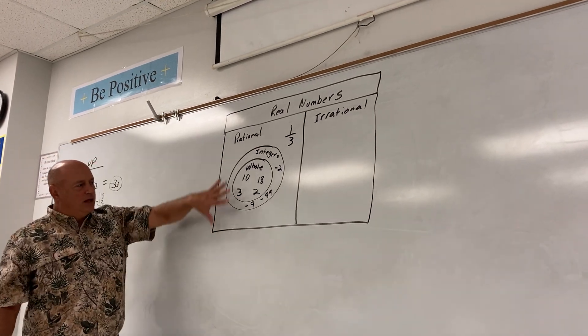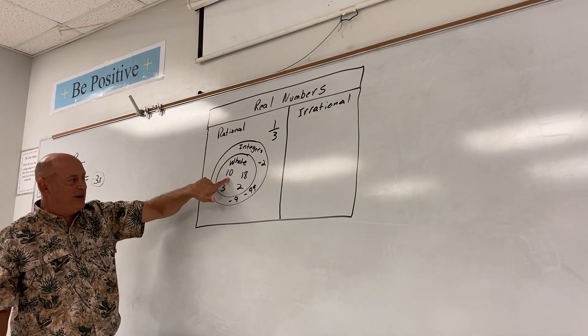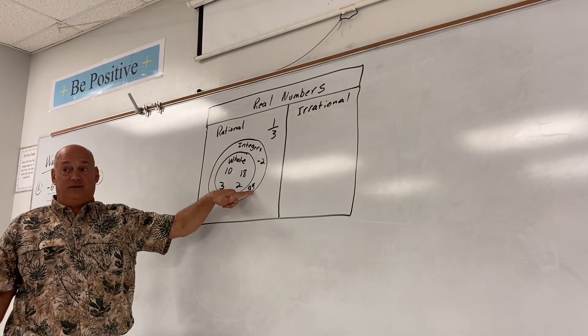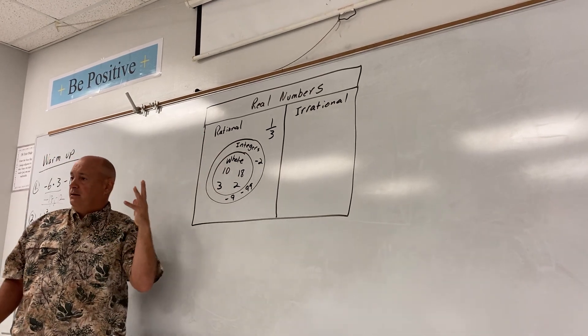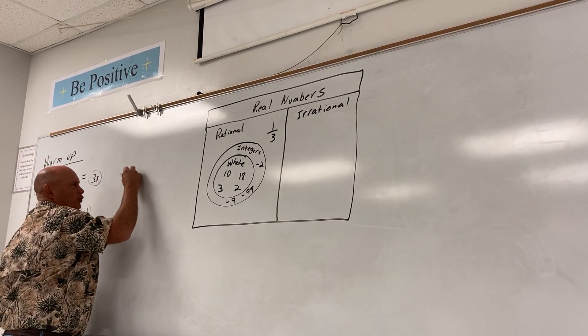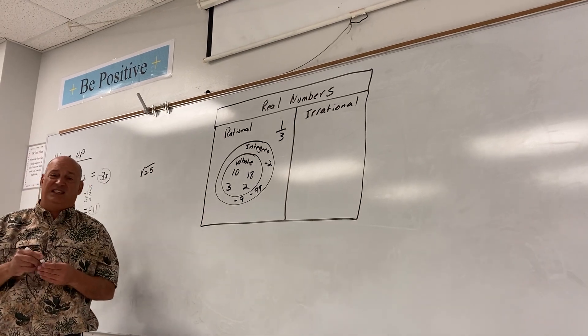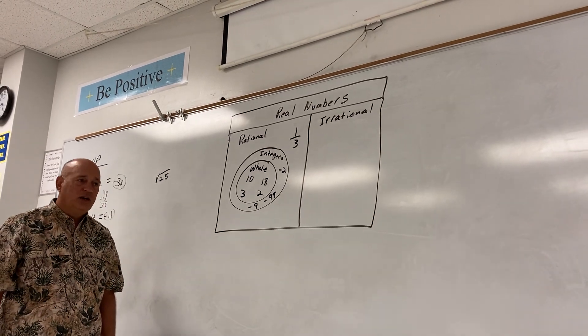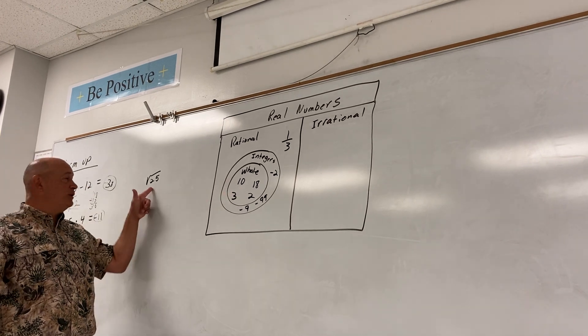So far, all these numbers that we've talked about are in the set of rational numbers. I can write that as a fraction, ten over one. I can write negative 99 as a fraction, negative 99 over one. I can write any of these as a fraction. What about the square root of 25? Five.